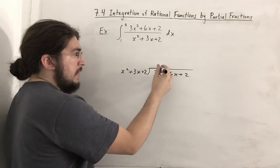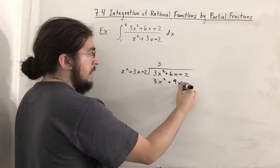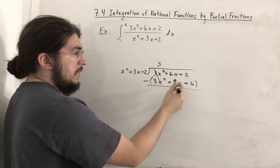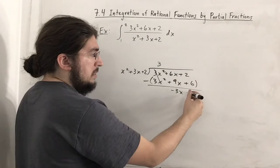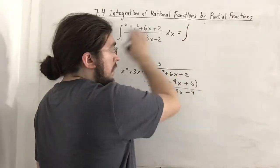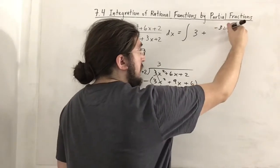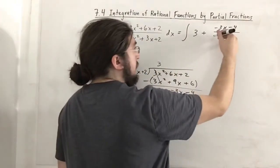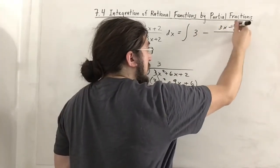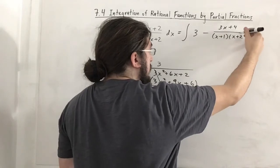Using long division: x squared times 3 gives 3x squared. Multiplying by 3 gives 3x squared plus 9x plus 6. Subtracting, the first terms cancel; 6x minus 9x is negative 3x, and 2 minus 6 is negative 4. So the remainder is negative 3x minus 4. We can write the rational function as 3 plus the remainder (negative 3x minus 4) over the original denominator, which factors as x plus 1 times x plus 2.